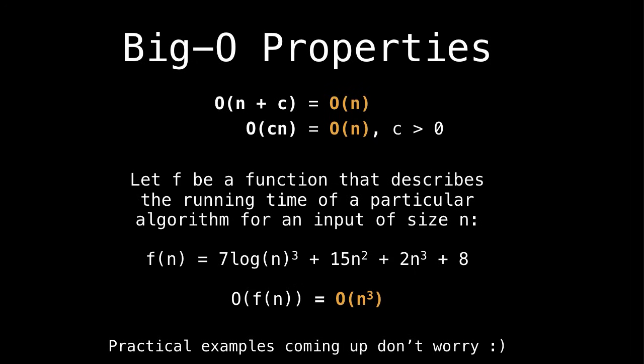But of course, this is all theoretical. In the real world, if your constant is of size 2 billion, yeah, probably, that's going to have a substantial impact on the running time of your algorithm. However, let us look at a function f, which I've defined over some input size n. If f of n is 7log(n)³ + 15n² + 2n³ + 8, well, Big O of f of n is just n³, because n³ is the biggest, most dominant term in this function.